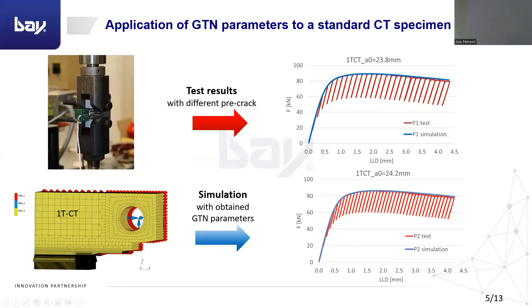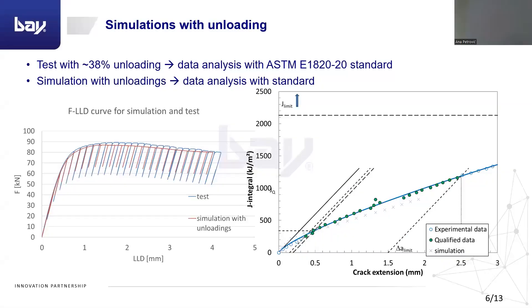Thereafter, because the J-integral can be determined by the ASTM E1820 standard, it stands for both testing and simulation cases. The crack propagation rate was the same in the simulation and measurements, and the test was performed with 38% unloading, but the evaluation was performed according to the standard. On the left side we can see the comparison of the force curves as a function of the LLD values, and on the right side the results of the evaluation based on the standard. It can be seen that the simulation results are a little bit below the measurements, but still they are in quite good agreement.